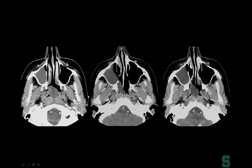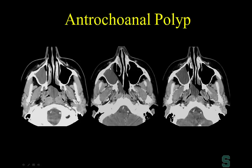Here is a lesion extending through the primary ostium of the maxillary sinus into the nasal cavity — this is an antrochoanal polyp, extending through the antrum of the maxillary sinus through the choana.